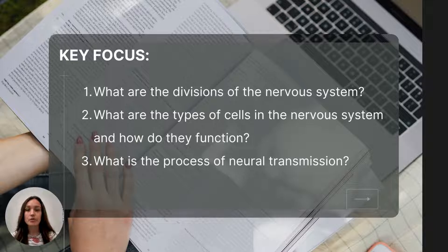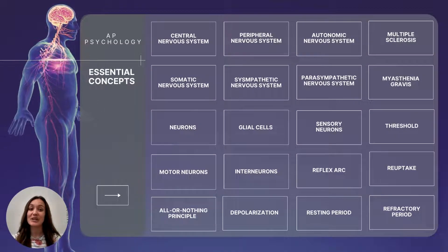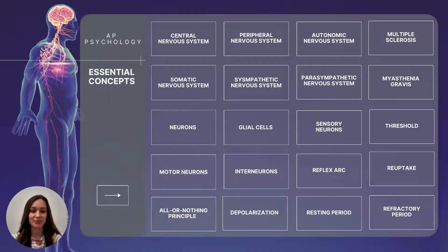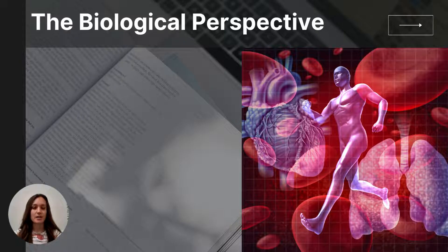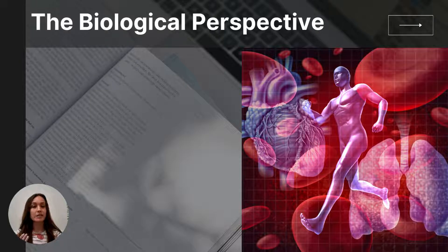After watching this video you should be able to answer the following key questions, and by the end of the video you will also be able to define all of the essential concepts from part two. As you already know from Unit 0, psychologists have different areas of focus that inform their perspective on the science of psychology. One of those is the biological perspective, and we will take a biological approach for the rest of this unit, working to understand the role of our brains and our bodies in our behaviors and thought processes.